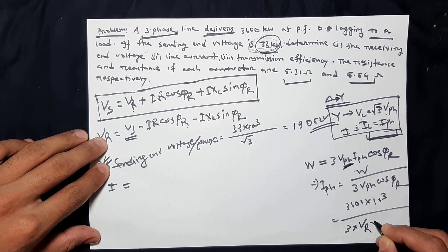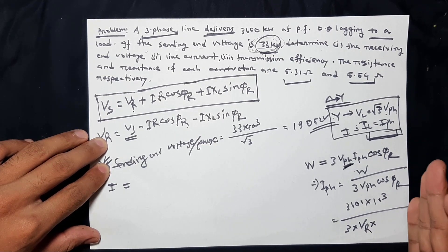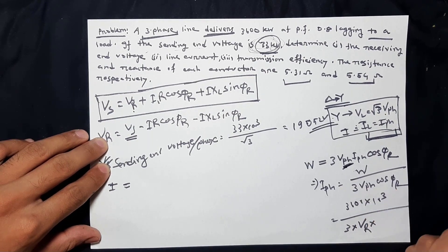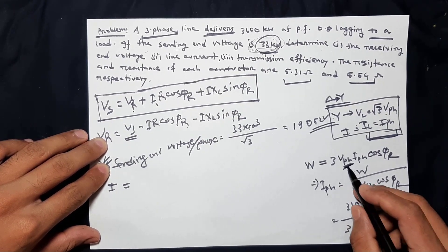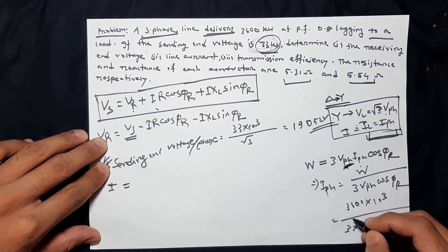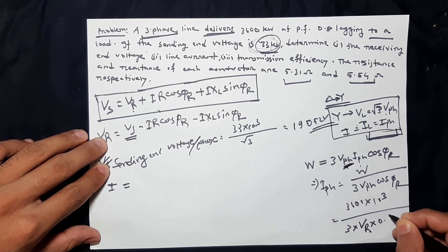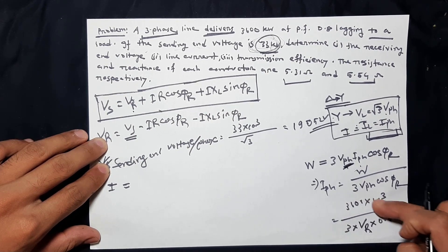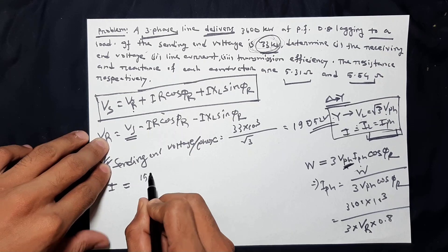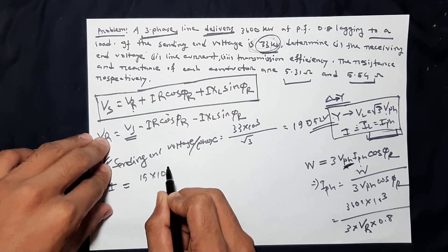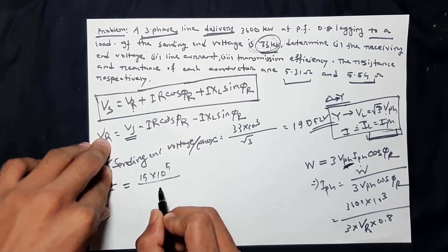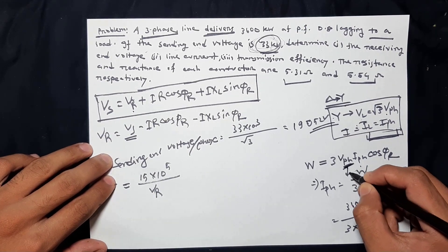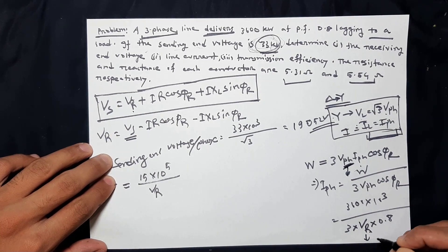VR, IR, cosφ — okay? So just either VPH, we have to go to VR, and then IPH, we have to go to 0.8. So just the calculation: the I value is simply I = 10⁵ divided by VR. So VPH — this phase voltage — that means power delivered.